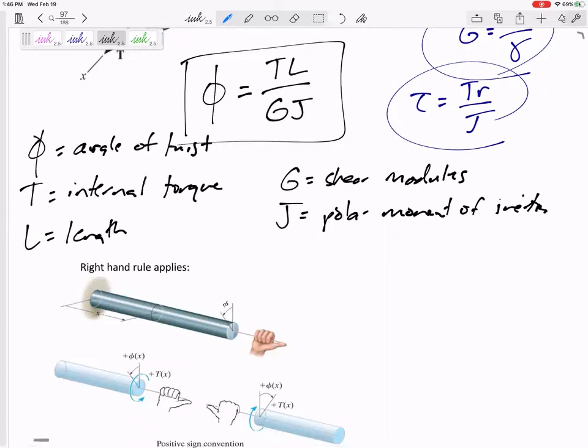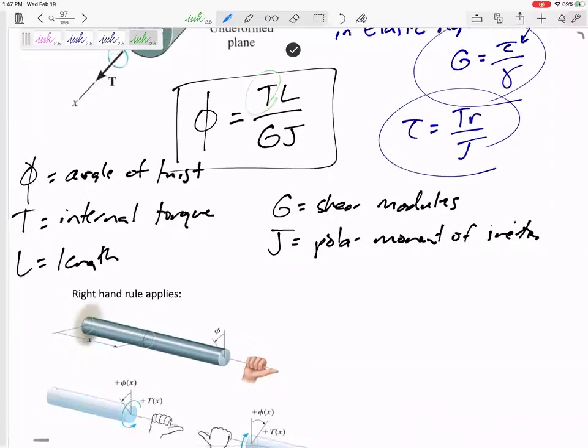We're going to do the right-hand rule. If we say we've got a positive angle of twist, then my cut, my internal torque T, would have been a positive, my thumb pointed out of the cut, right-hand rule. The only signs, this T will be positive or negative, according to the right-hand rule. But L will obviously be positive. G will all be, J will be positive. So, the sign of the torque T gives you the sign of the angle of twist.